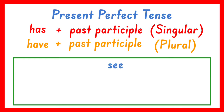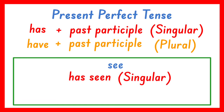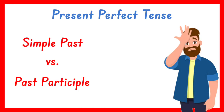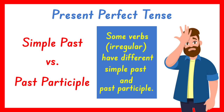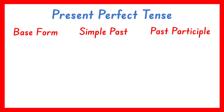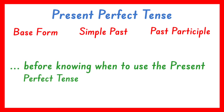Another example: see. The present perfect tense of this verb is has seen for a singular subject and have seen for a plural subject. Don't be confused with the simple past and past participle forms of verbs because some verbs have different simple past and past participle forms. Let's have some examples of these verbs first before knowing when to use the present perfect tense of verbs.